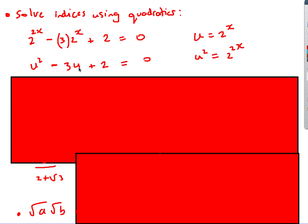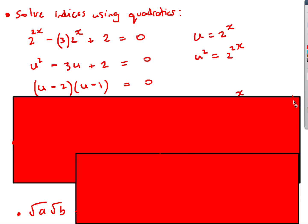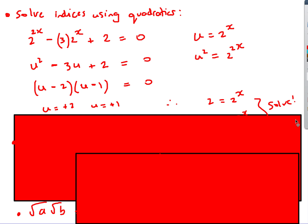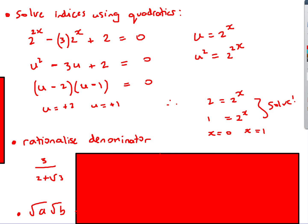Factorising: (u − 2)(u − 1) = 0, giving u = 2 or u = 1. Since u = 2^x, we solve 2^x = 2 → x = 1, and 2^x = 1 → x = 0. So x = 0 or x = 1.